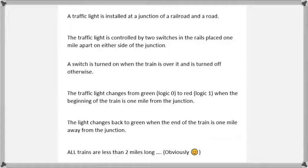As you can see, we have a real world problem involving a traffic light at a railroad crossing and we have two switches in the rails on either side of the crossing a mile away which are used to control the light to prevent vehicles from trying to cross when the train is coming.